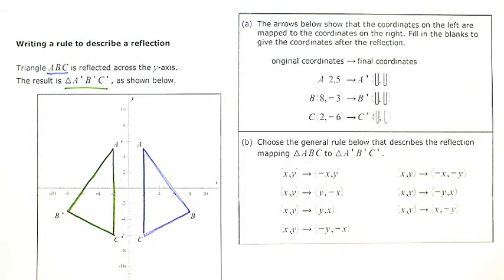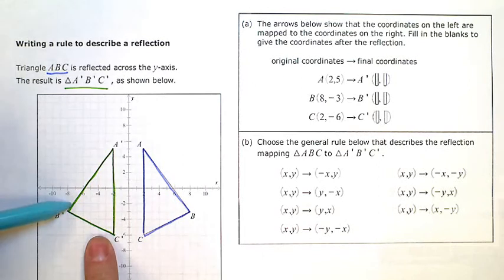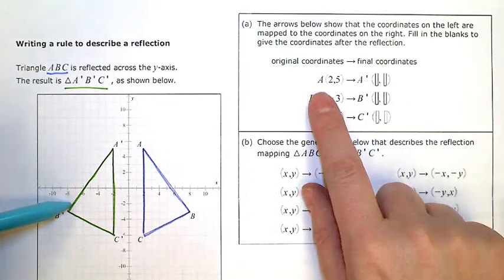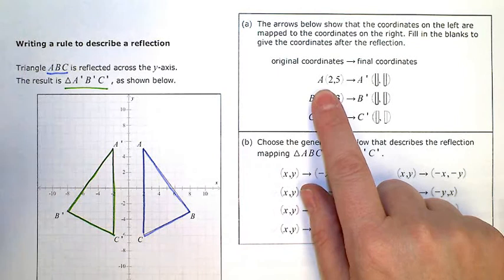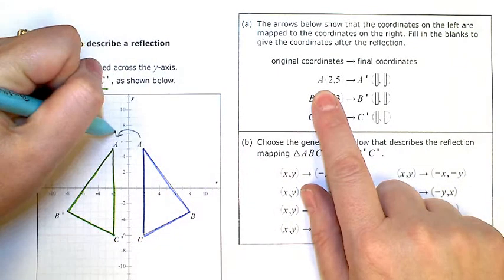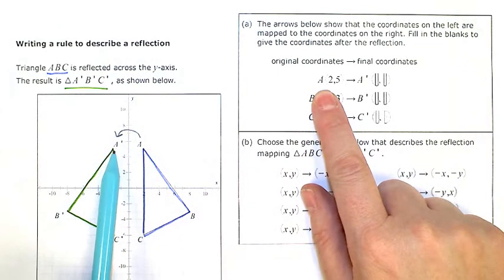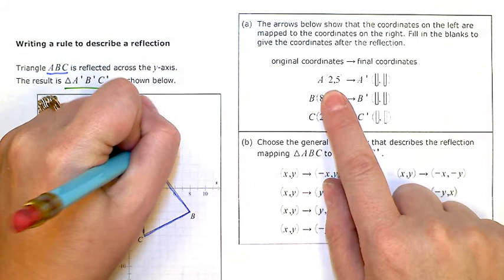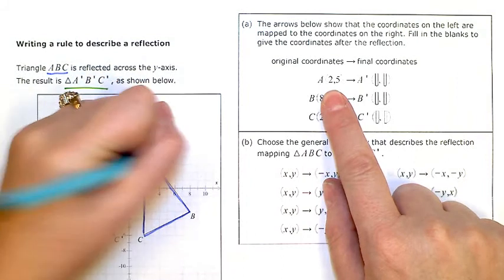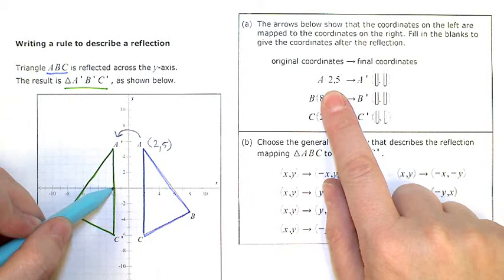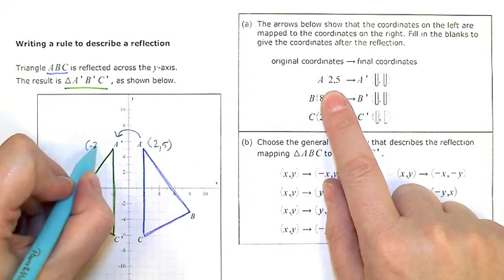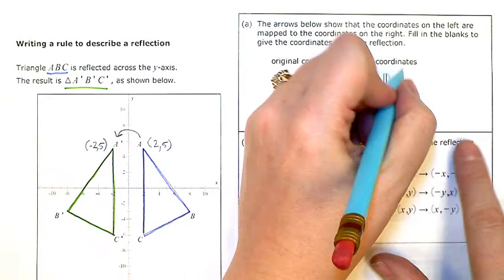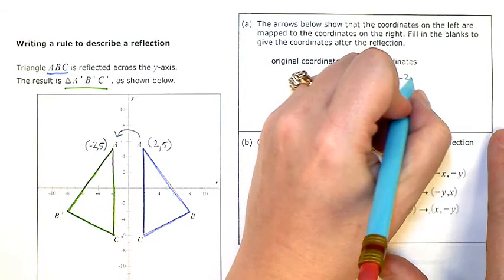The first thing that I need to do is name the coordinates on A'B'C', so point A was reflected and is being mapped to A'. It started out positive 2, positive 5, and after the reflection, we're at negative 2, positive 5. So I would put negative 2, positive 5 over here.